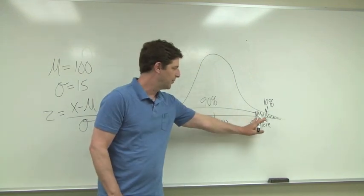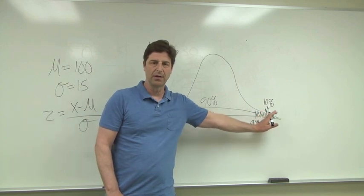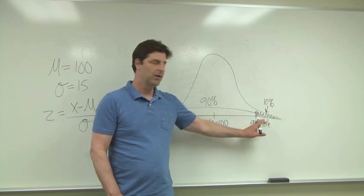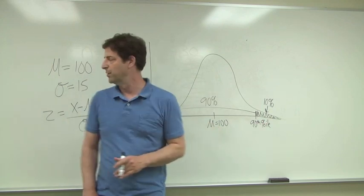So here's the point, 90% fall below that, 10% fall above that. How do we figure out what's the score that marks the 90th percentile in the distribution? And here's how you do it.